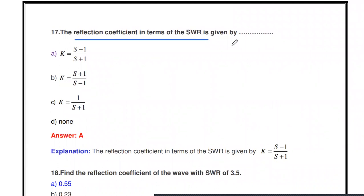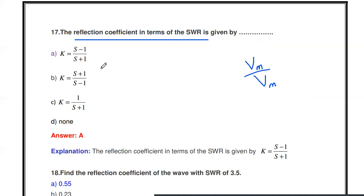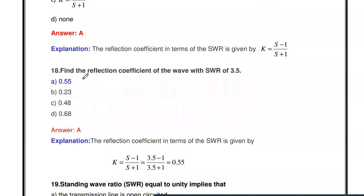The reflection coefficient in terms of SWR is given by — what? We already know two SWR formulas: SWR = Vmax / Vmin, and SWR = (1 + |k|) / (1 − |k|). The reflection coefficient in terms of SWR is: k = (S − 1) / (S + 1), where S is the SWR.